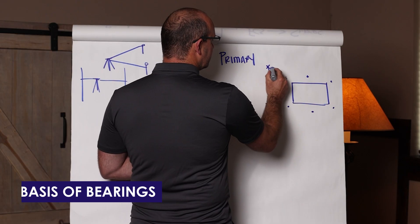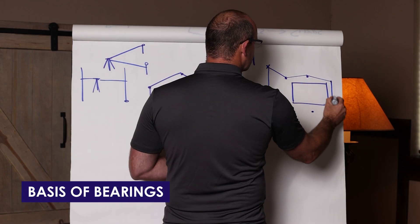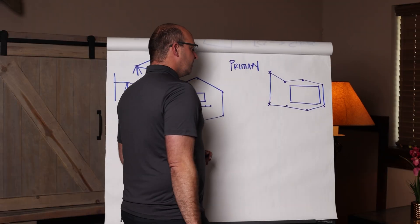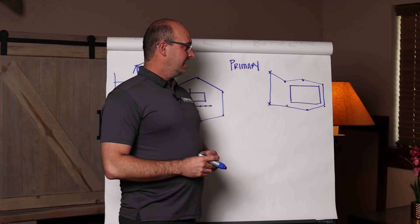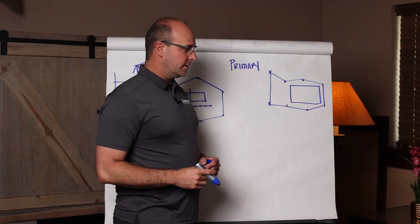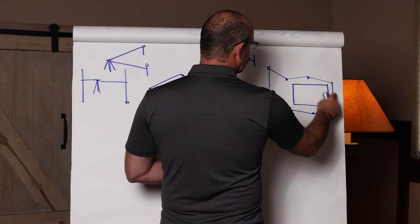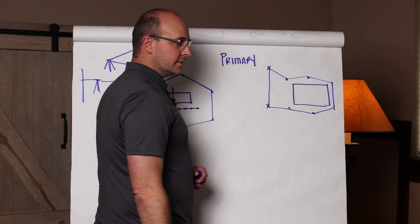And typically what you'll do is you'll go from the basis of bearings and do a traverse and a level loop to surround that project site. Primary control is permanent and surrounds the job site and it allows you to control the overall job site. Now doing it with a traverse and a level loop will network these points together really closely.